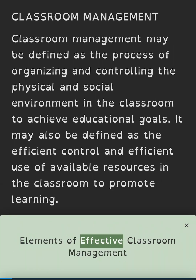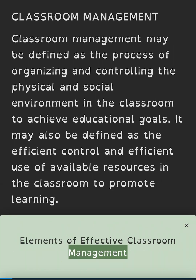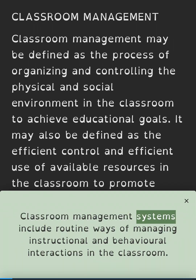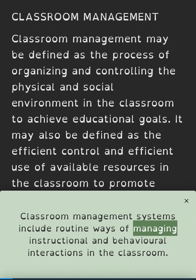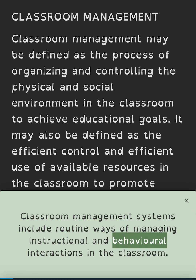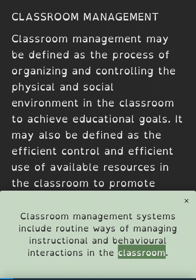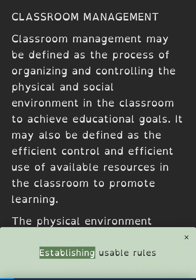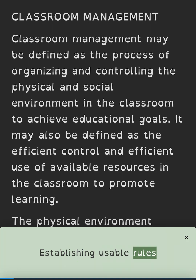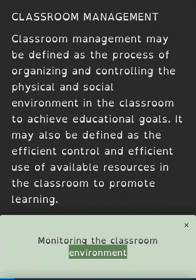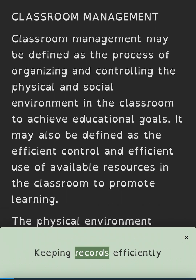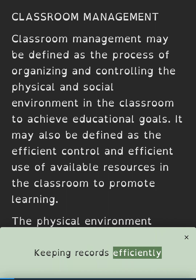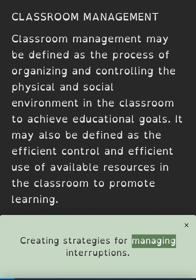Elements of effective classroom management: Classroom management systems include routine ways of managing instructional and behavioral interactions in the classroom. Six key elements of effective classroom management are: Planning, establishing usable rules, getting off on a good start, monitoring the classroom environment, keeping records efficiently, and creating strategies for managing interruptions.